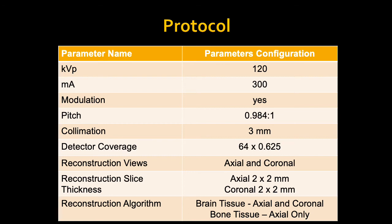A pitch of 0.9 is always acceptable with 3 mm collimation — use all your detectors. You would always want to do axial and coronal reconstruction. The only time you would do a sagittal reconstruction is when you actually see raised intracranial pressure due to a lesion sitting in the inferior vault.